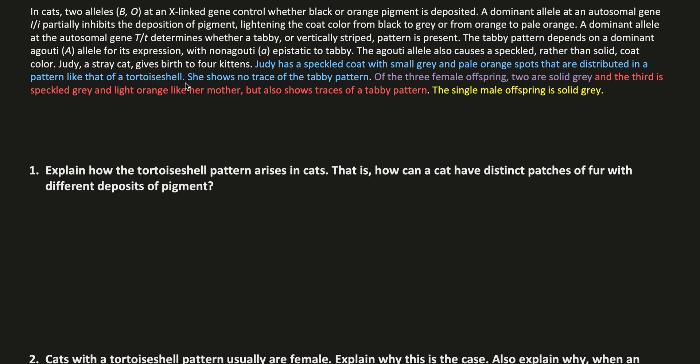The following example has to do with having multiple genes that all affect a single phenotype, but in different ways, with some genes epistatic to others. The question starts off with saying: in cats, two alleles, B and O, at an X-linked gene control whether black or orange pigment is deposited. It's X-linked and we have two different alleles, B and O.